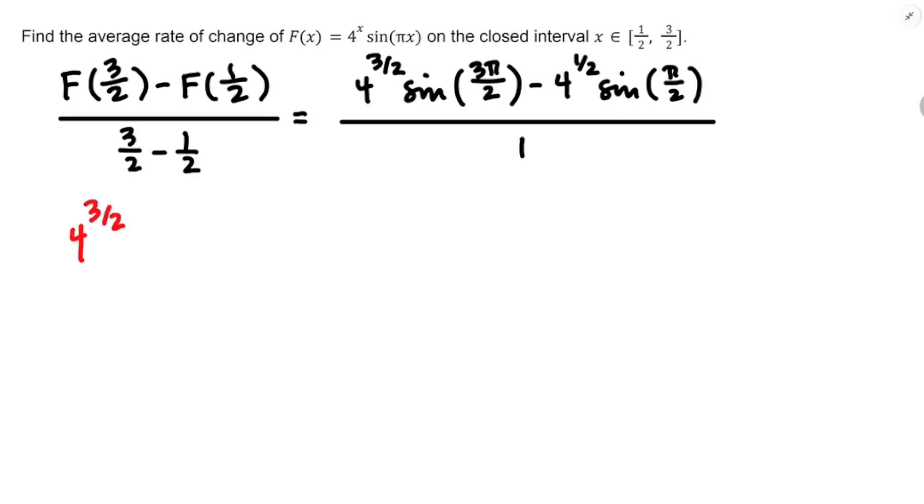Four to the three halves, what we're going to need to do is deal with the denominator first to keep the numbers manageable. The one half power is the square root of four, and we're going to take that to the third power. So that's going to be two to the third, and that feels like eight. Then for sine of three pi over two, three pi over two is all the way at the bottom of the unit circle. And sine is the vertical displacement from the x-axis, so that's going to be negative one.